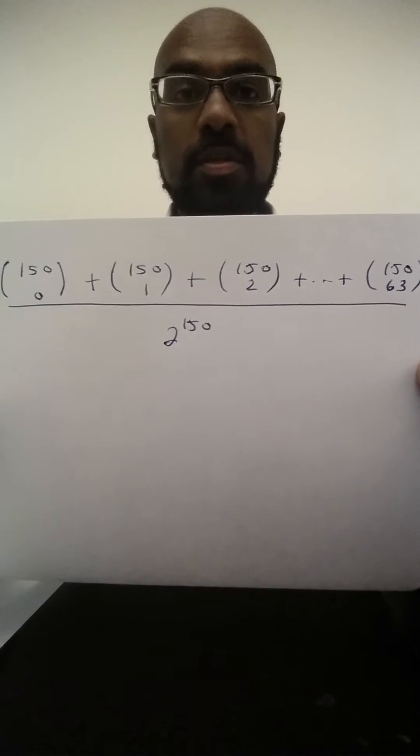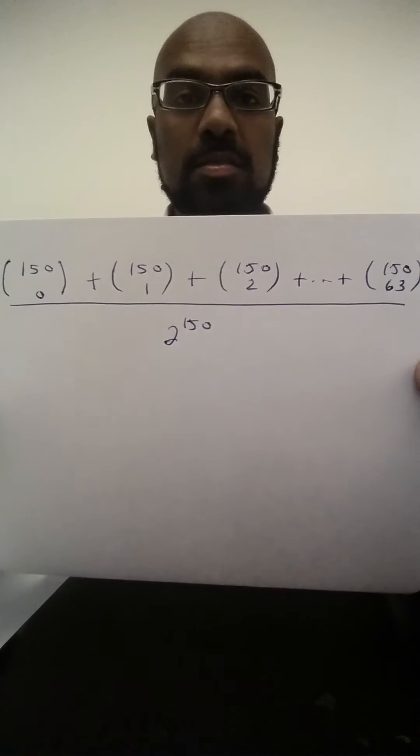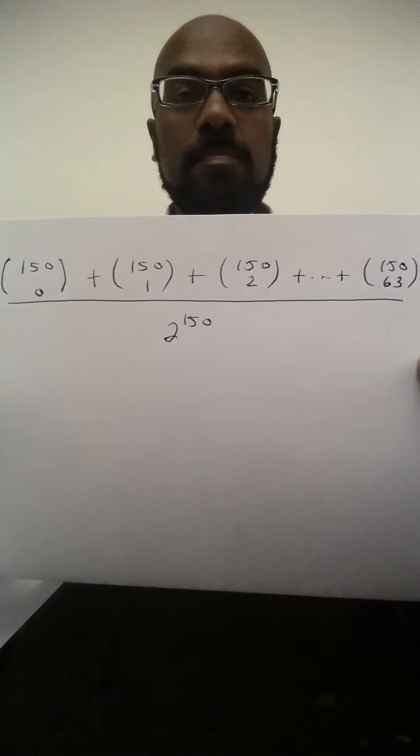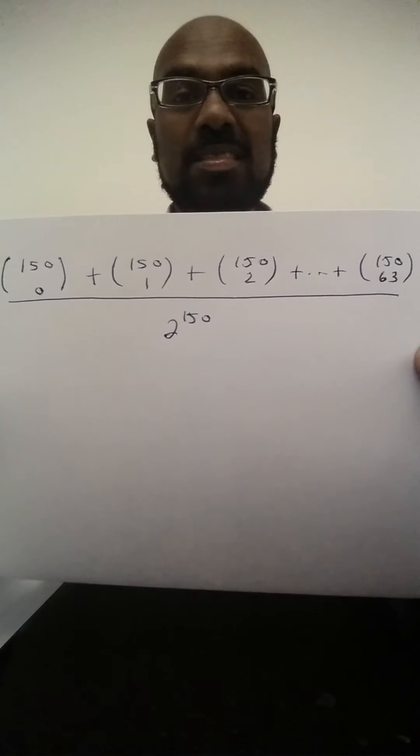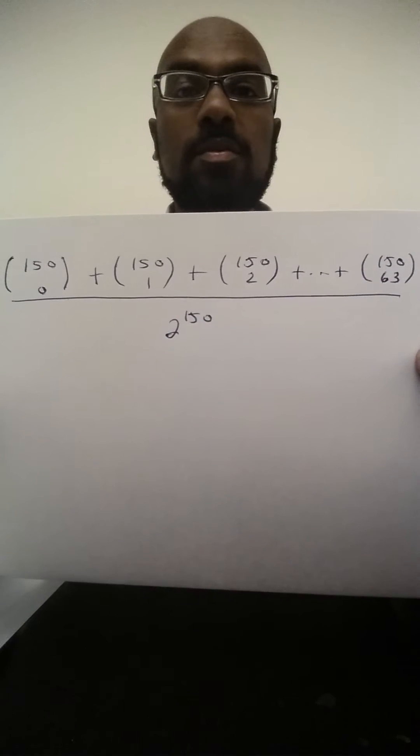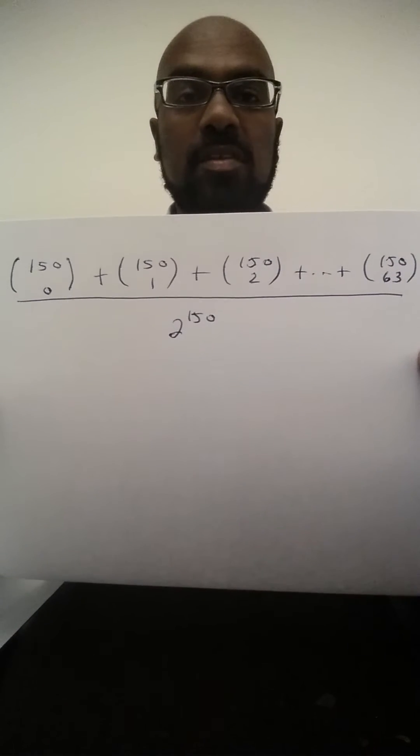So this is actually the probability we're interested in, but there's a little bit of a problem here. The problem is, how do we estimate this number? If you're familiar with it, you could try to use Stirling's formula to estimate the numerator, but that involves some transcendental numbers and it'll get really complicated really fast.